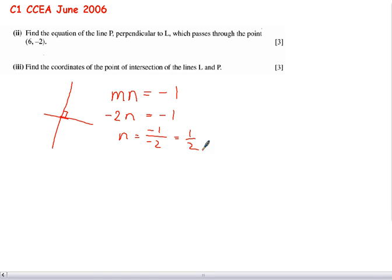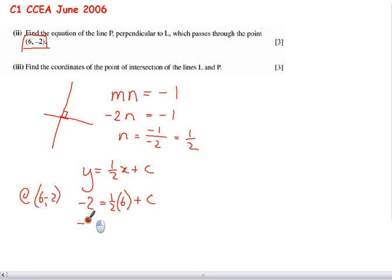So again, we've now got a gradient of the line that's perpendicular. Here's a point that's on that line. So y equals a half x plus c. And at that point, 6, negative 2, y is negative 2, is equal to a half upon the x value, 6 plus c. So minus 2 equals 3 plus c. And in this case, c is negative 5.